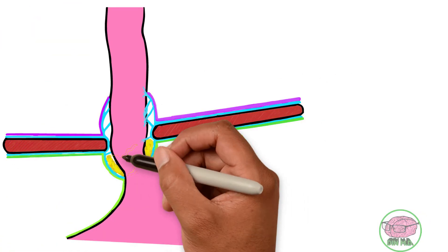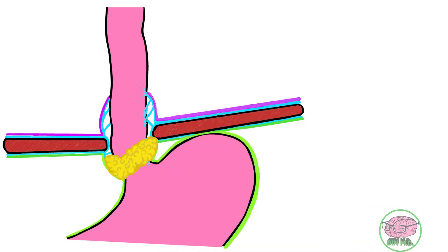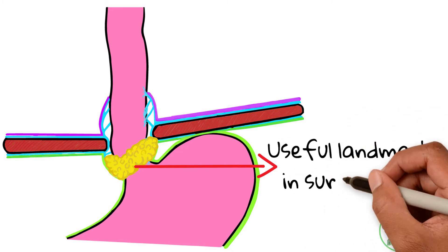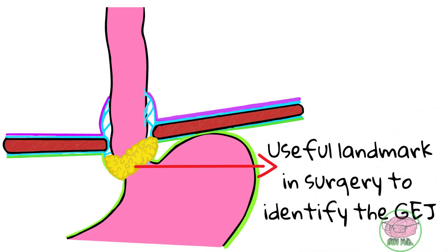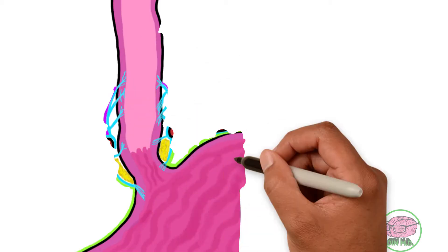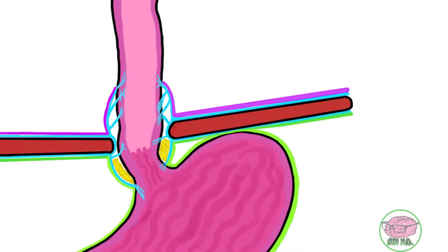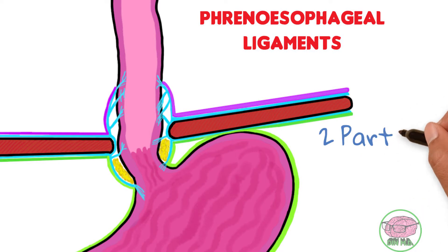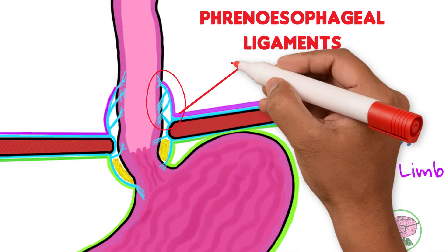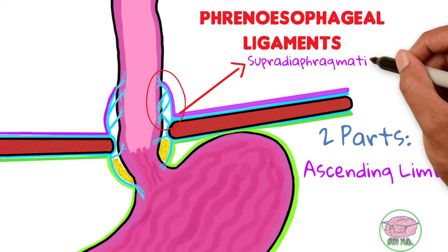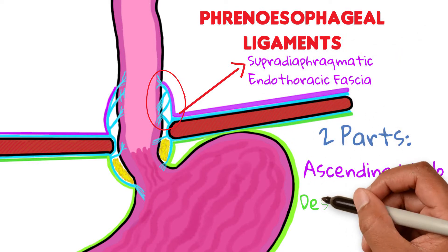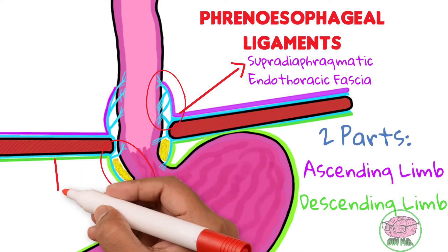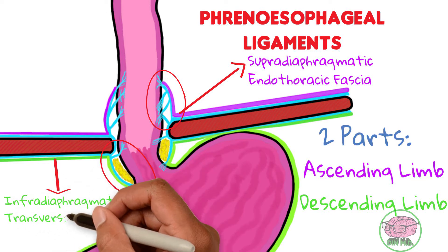Also, a fat pad may be visible beneath the visceral peritoneum covering the anterior surface of the gastroesophageal junction. This can be a useful landmark in surgery to identify this junction. The esophagus is tightly attached to the esophageal hiatus via two ligaments on each side known as the phrenoesophageal ligaments. These ligaments are made up by an ascending limb formed by the supradiaphragmatic endothoracic fascia and also by a descending limb made up from the infradiaphragmatic transversalis fascia.